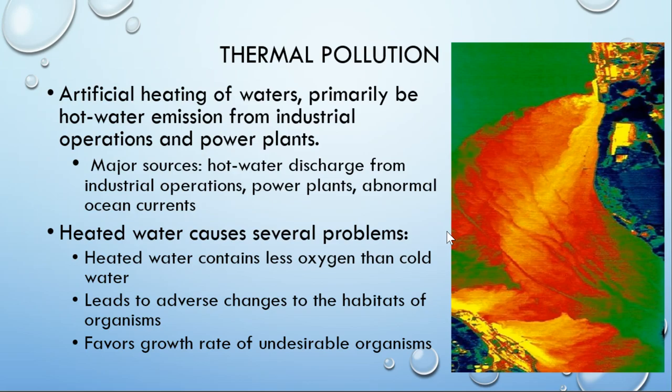Thermal pollution is the artificial heating of waters. Hotter water can hold less oxygen, so you get less dissolved oxygen and fish don't do as well. You may also heat the water past species' ranges of tolerance, causing them to migrate or die out, losing species from the ecosystem and changing the whole system. So: less oxygen, and may exceed ranges of tolerance.